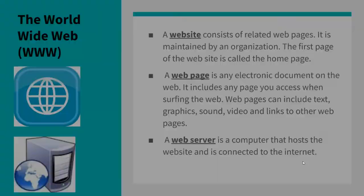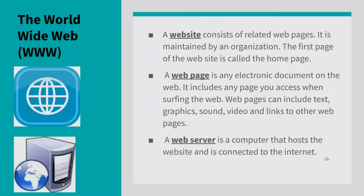Three terms: website, web page, and web server. A website consists of related web pages from the same organization. The first page of a website is traditionally called the home page. A web page is an electronic document on the web — any page you access when surfing the web — and can include text, graphics, sound, video, and links. A web server is a computer that hosts the website and is connected to the Internet.